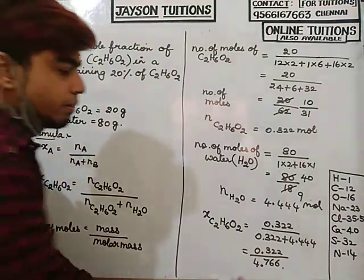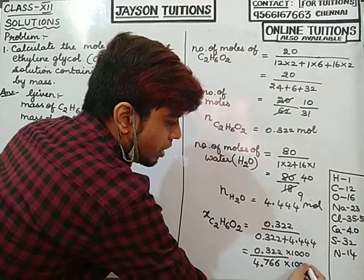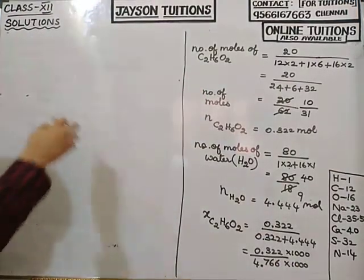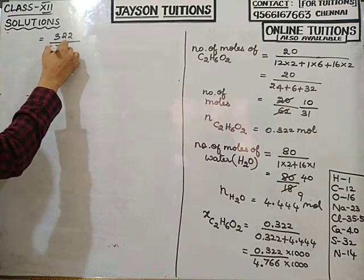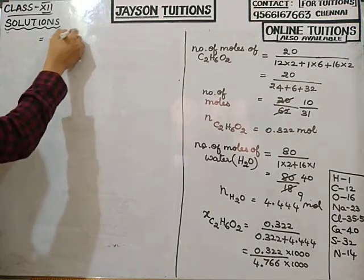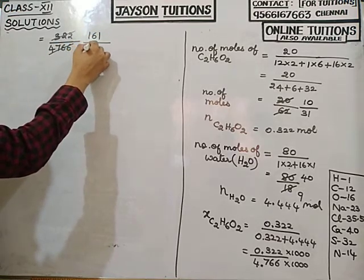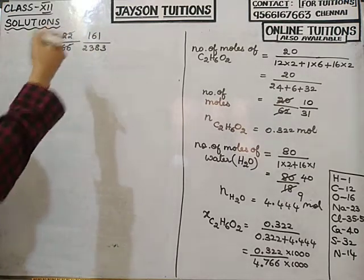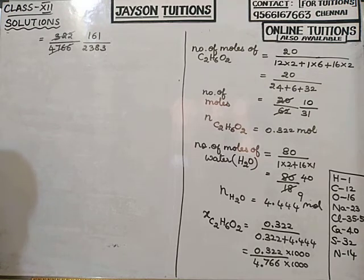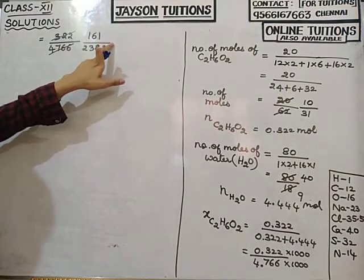To remove the decimal, multiply both by 1000: this gives 322 divided by 4766. Since this is difficult to divide directly, I will use logarithms. For division, you subtract in logarithm: log(161) minus log(2383).